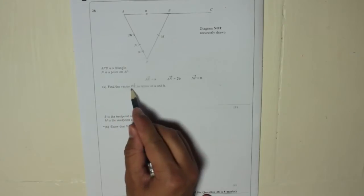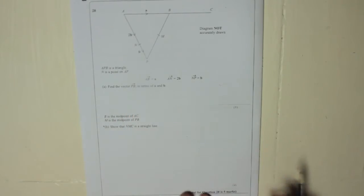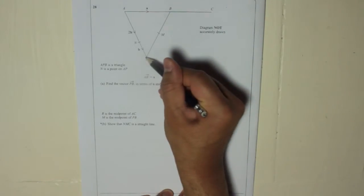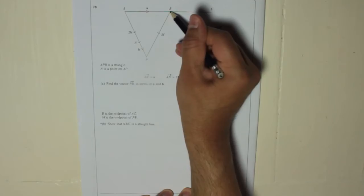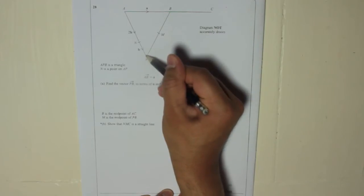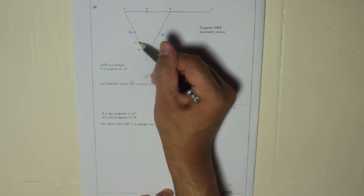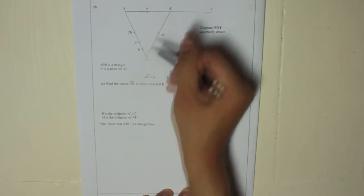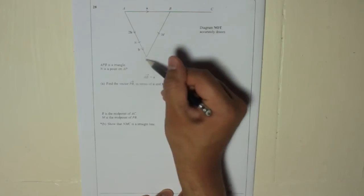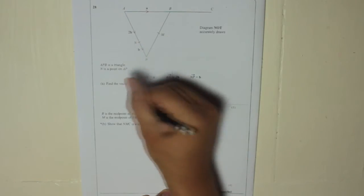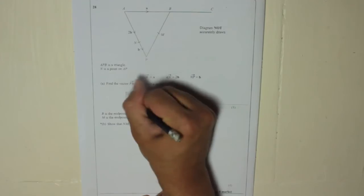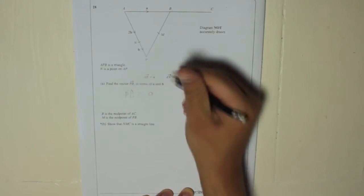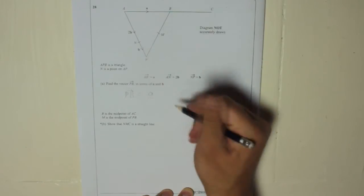Find the vector P to B in terms of A and B. Remember, they're just like little puzzles. You want to get from P to B using A's and B's. If you go this way, you go minus a B, minus another 2B, plus an A. That gets you from P to B. So minus 3B plus A, which gives us PB equals A minus 3B.